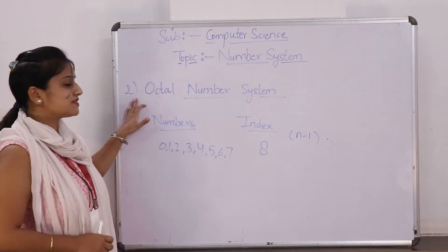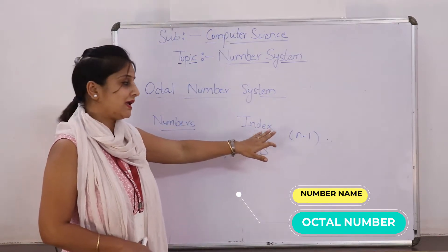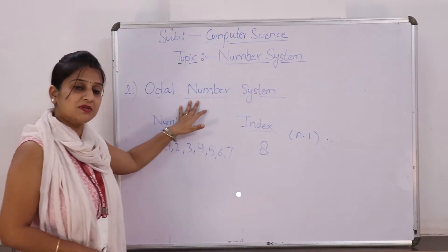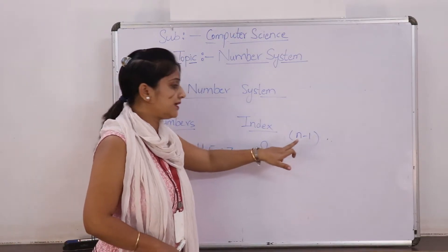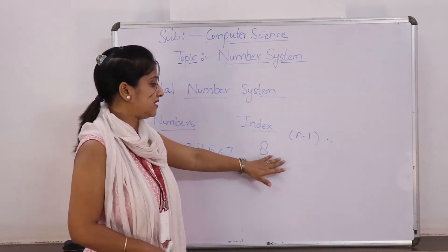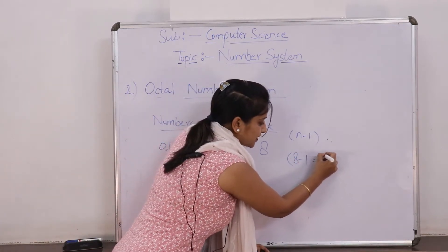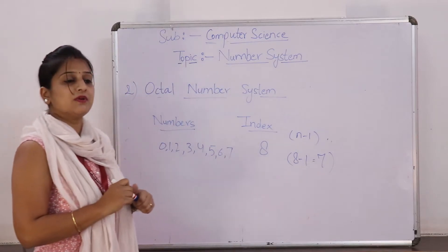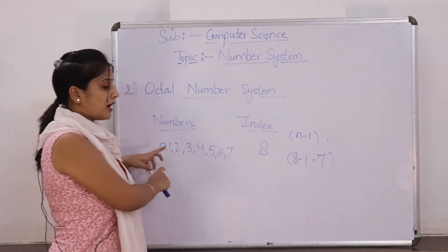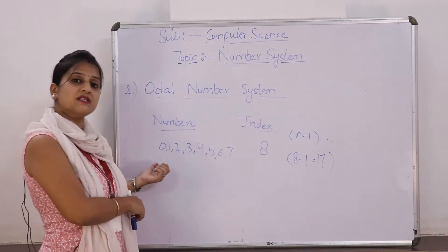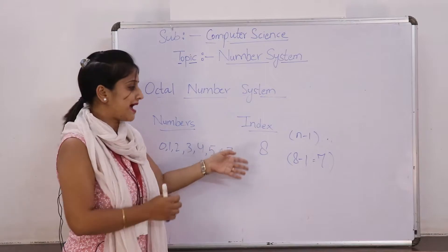Our second number system is the octal number system. Here the index is 8. Using n-1: 8-1 equals 7. So the numbers in the octal number system start from 0 and go up to 7. The digits are: 0, 1, 2, 3, 4, 5, 6, and 7.